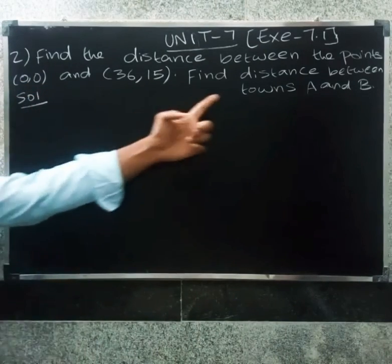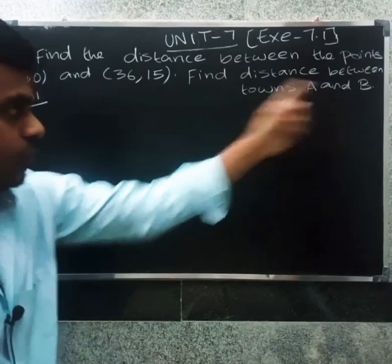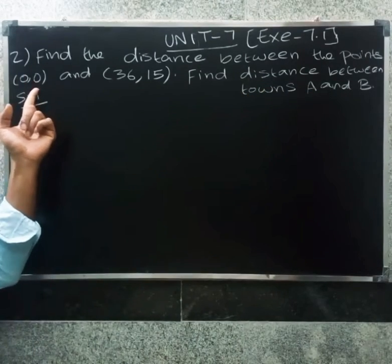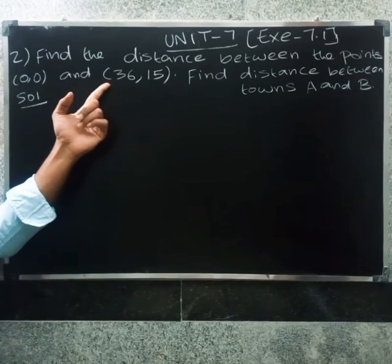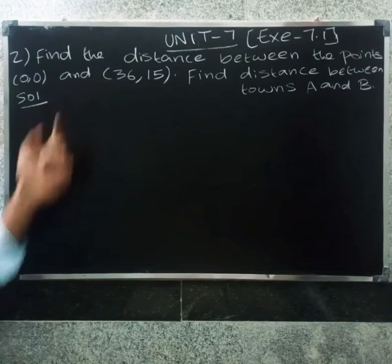The distance between the towns A and B. Towns A is at 0,0 and B is at 36,15.